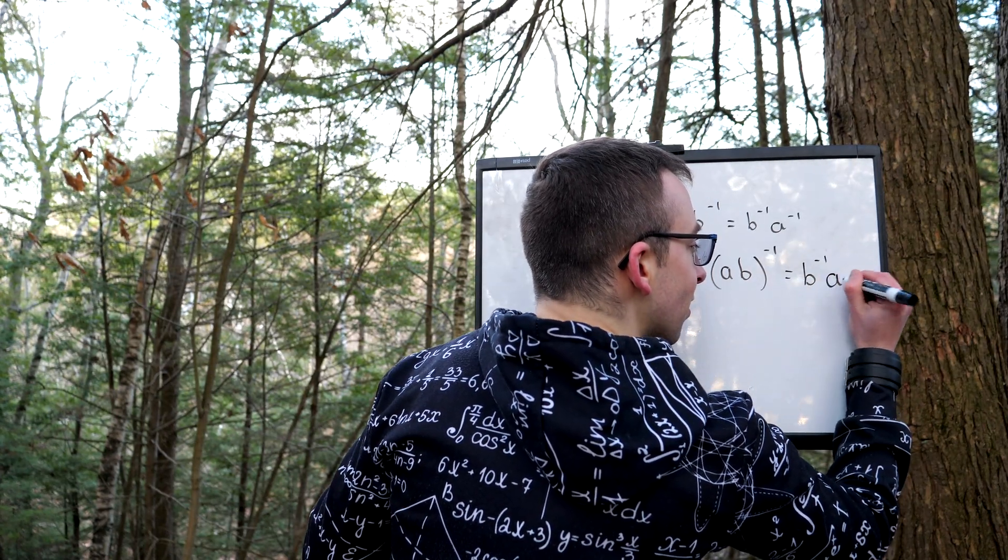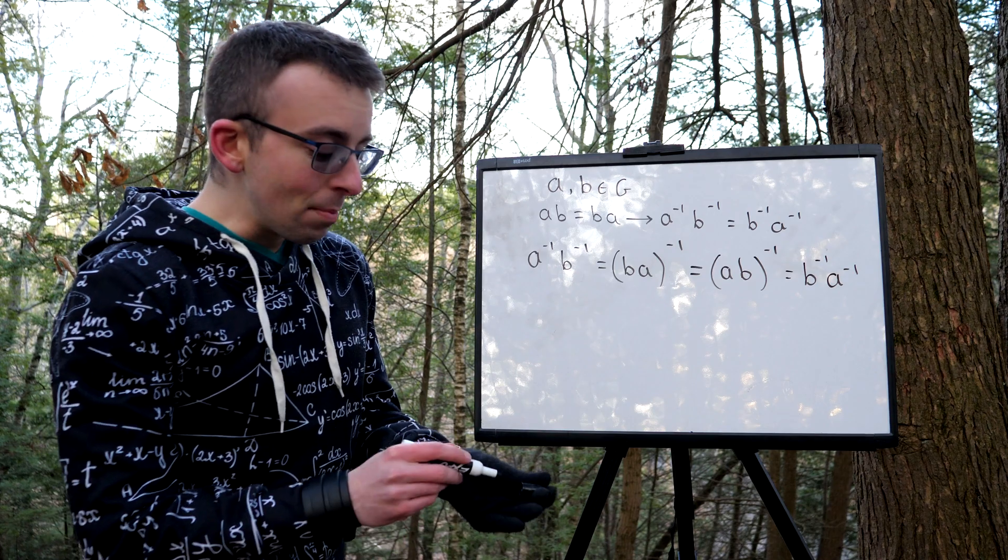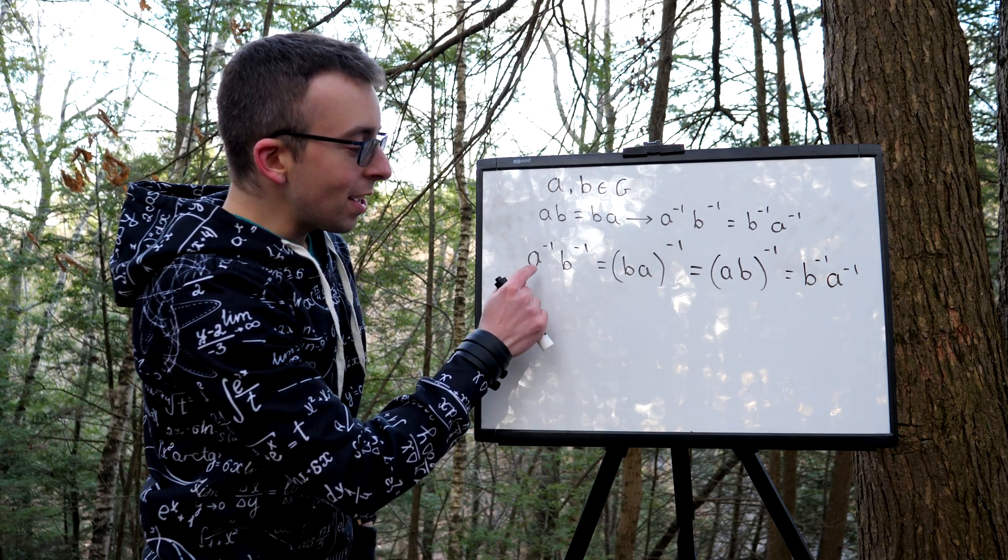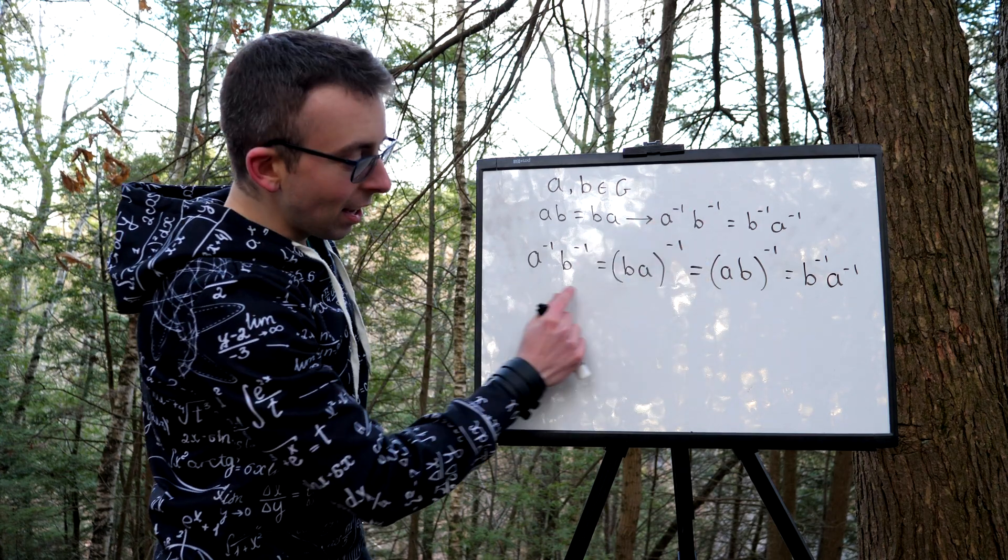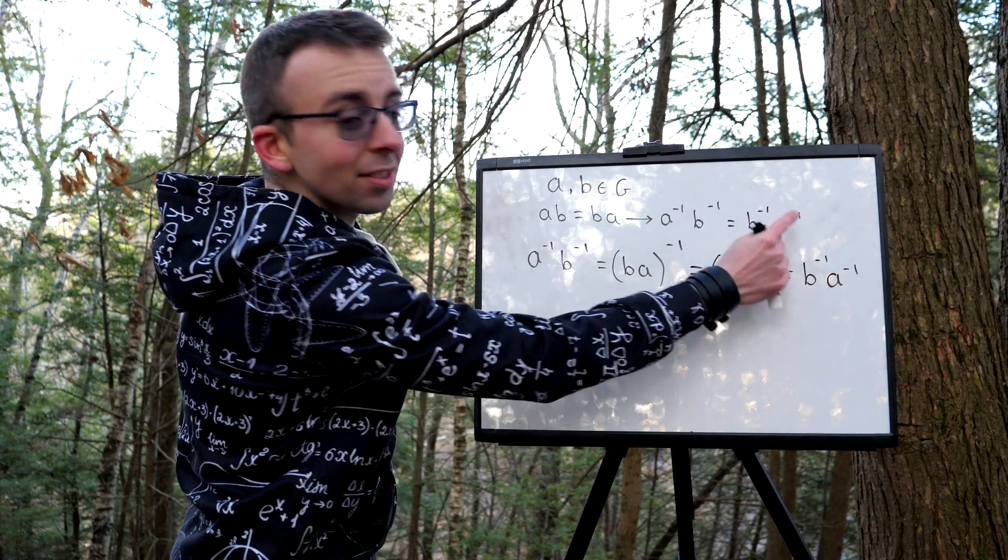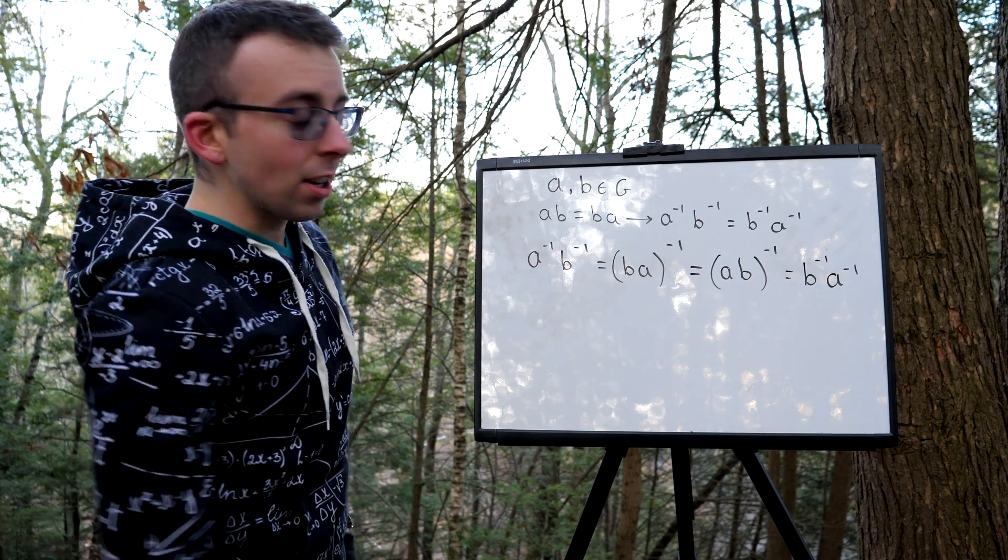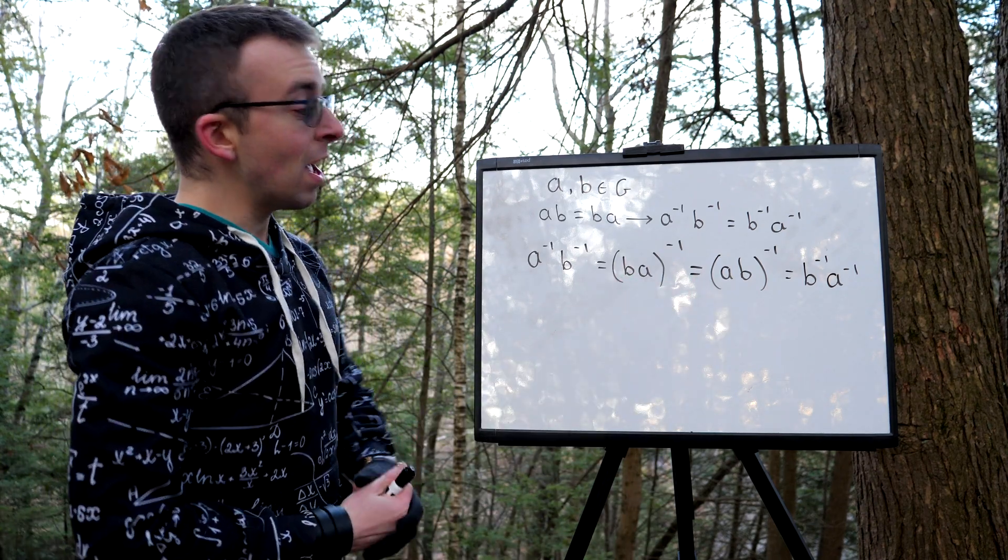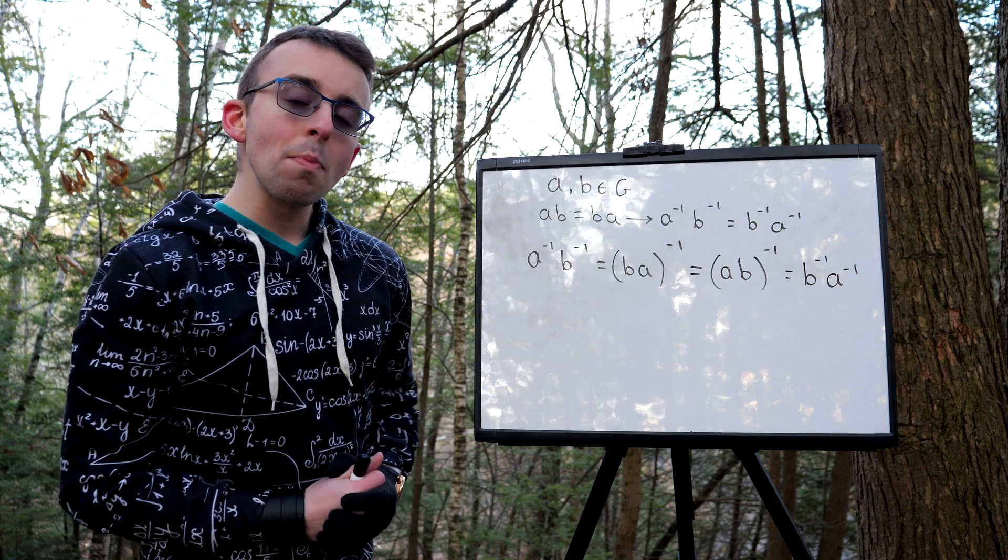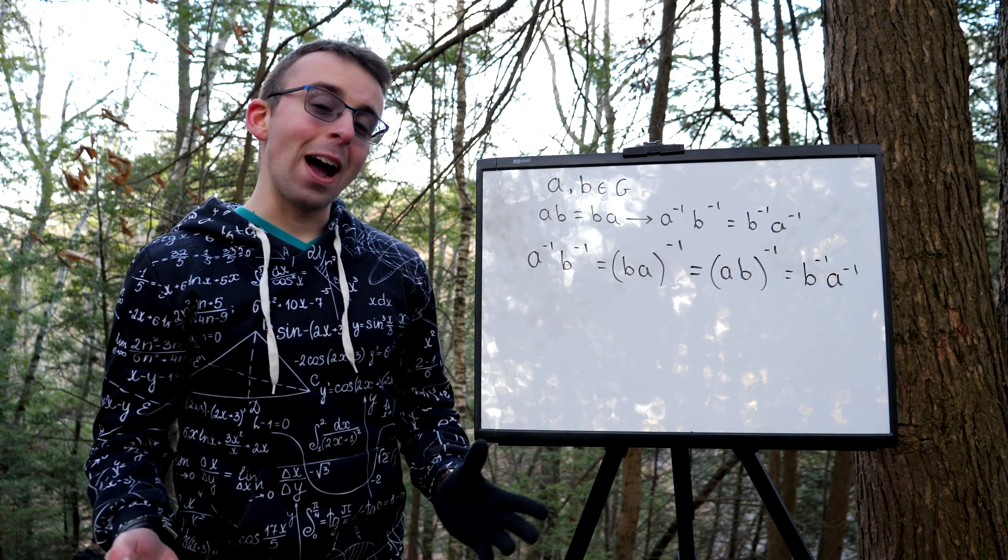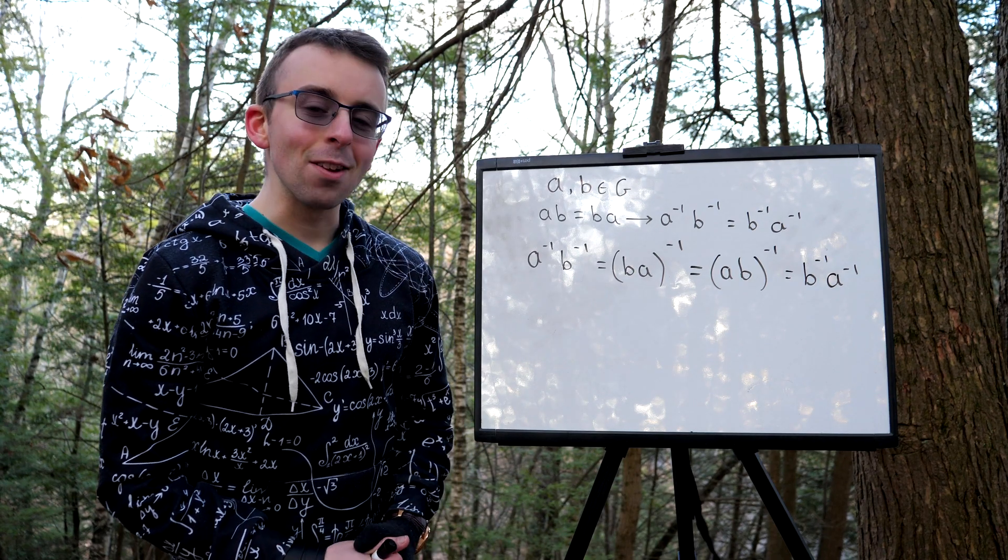B inverse a inverse. And so basically by two applications of the socks and shoes property, we've shown that a inverse b inverse equals b inverse a inverse, just as desired. Again, I'll leave a link in the description to my proof of that property that we use. That's how you prove that if two group elements commute, then their inverses commute. So I hope that was helpful, and thank you for watching.